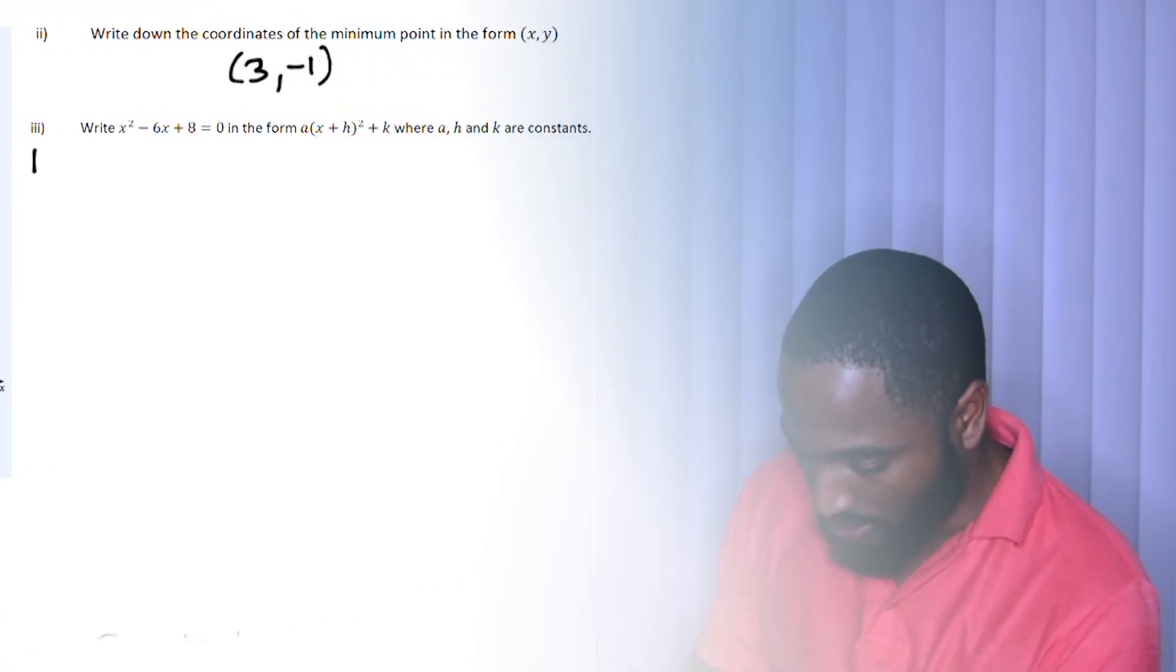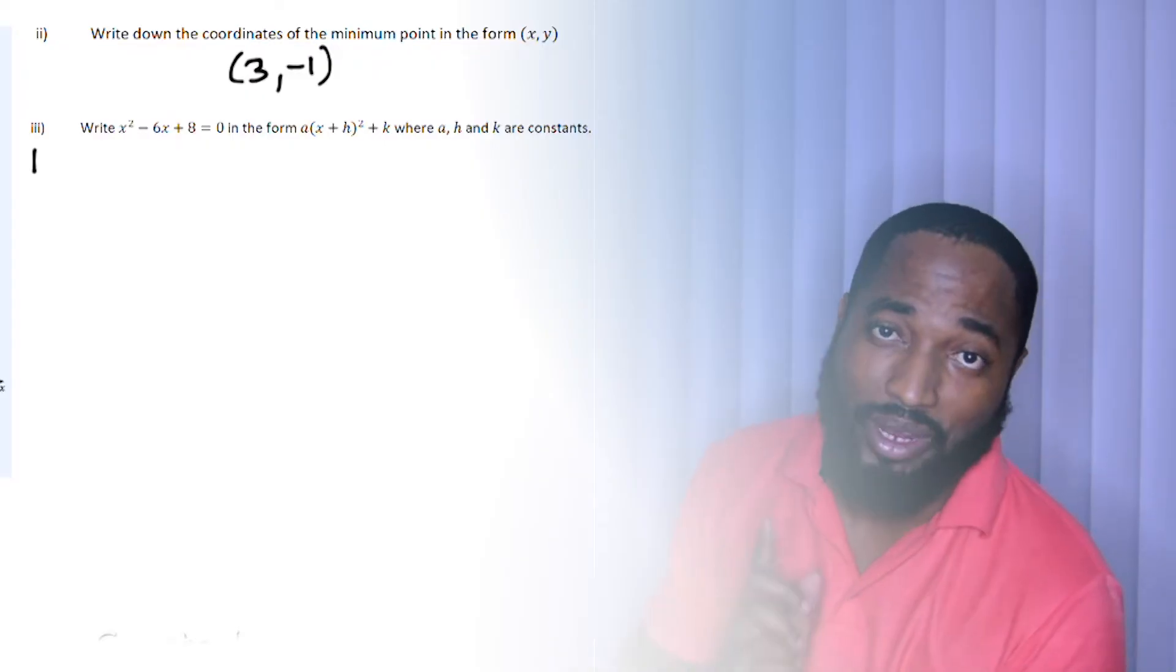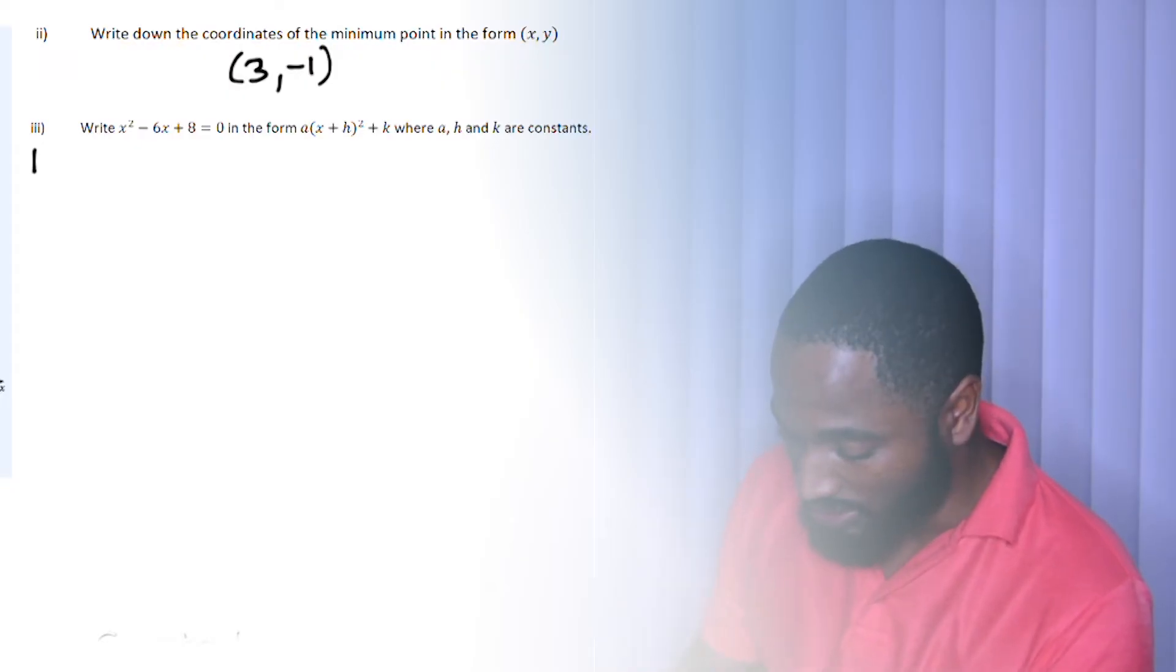Next part writes x² - 6x + 8 = 0 in completing the square form. So we're going to complete the square. This is completing the square here. I have seen four, five, six ways of completing the square. I just suggest that you create the perfect square.